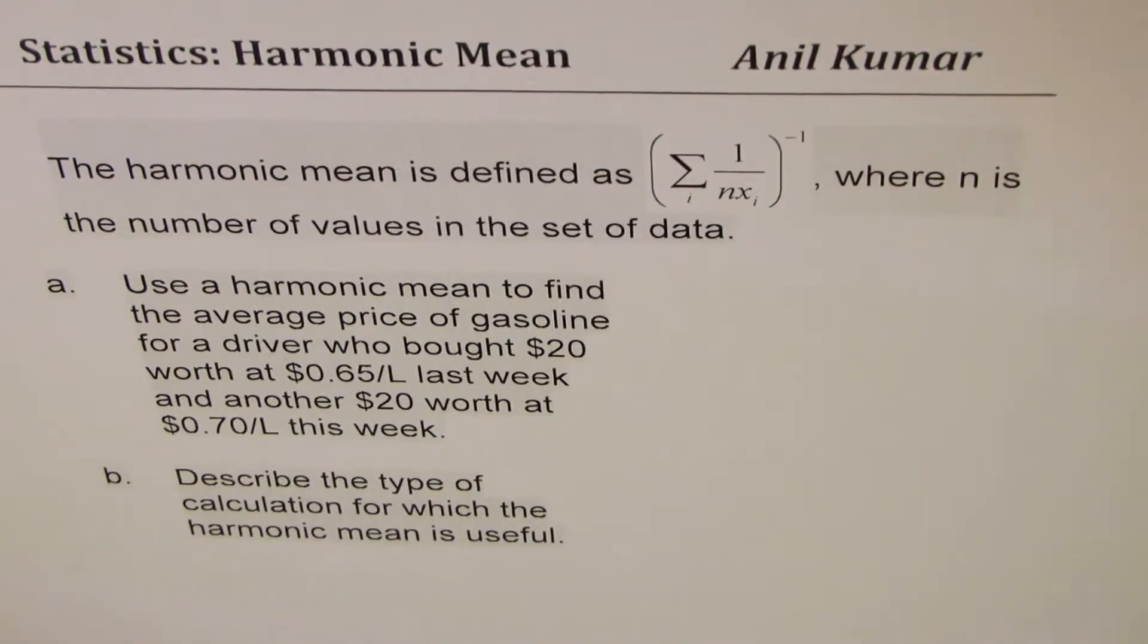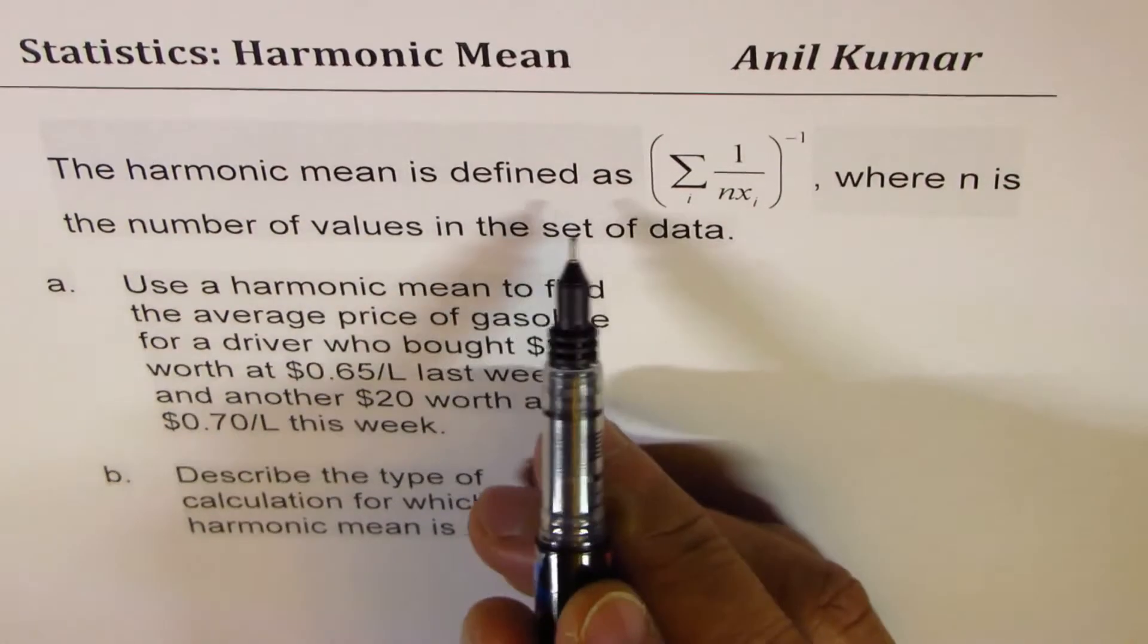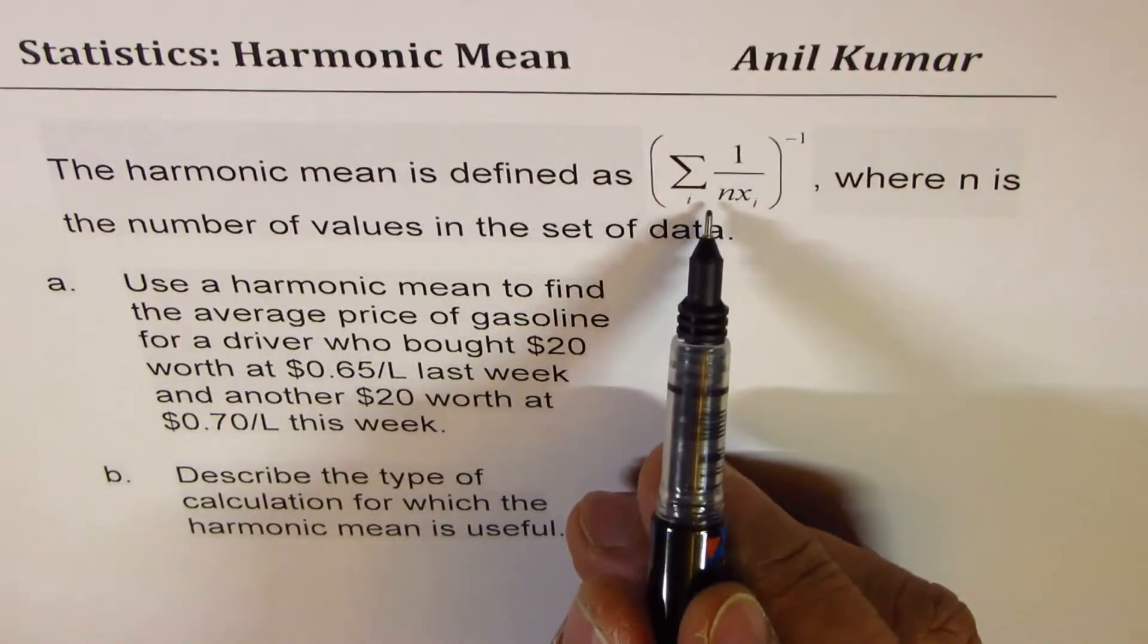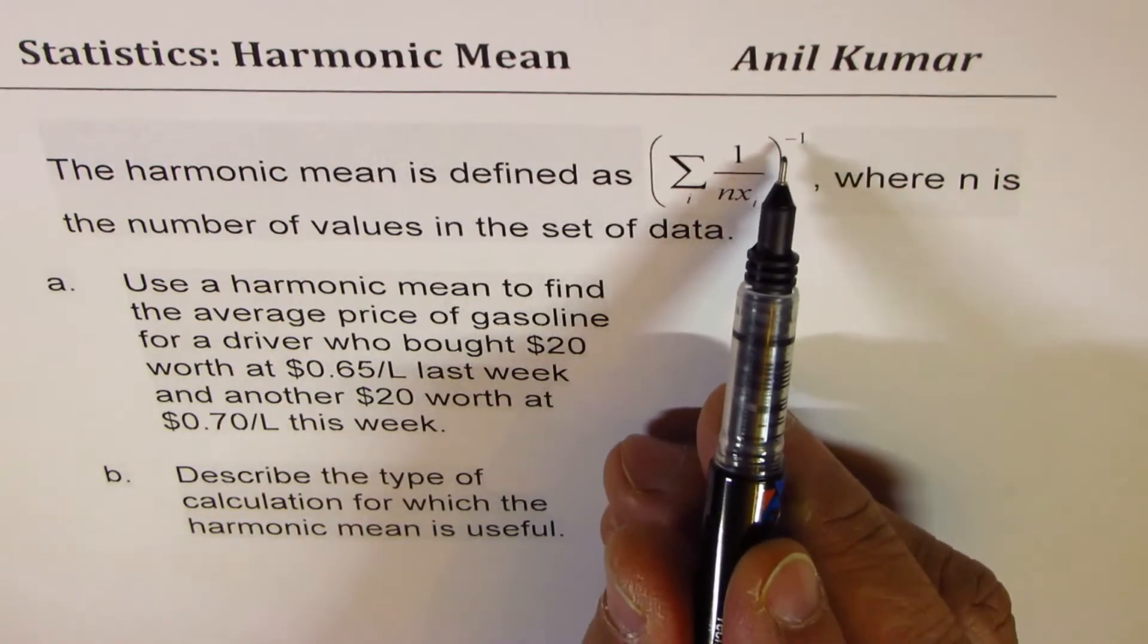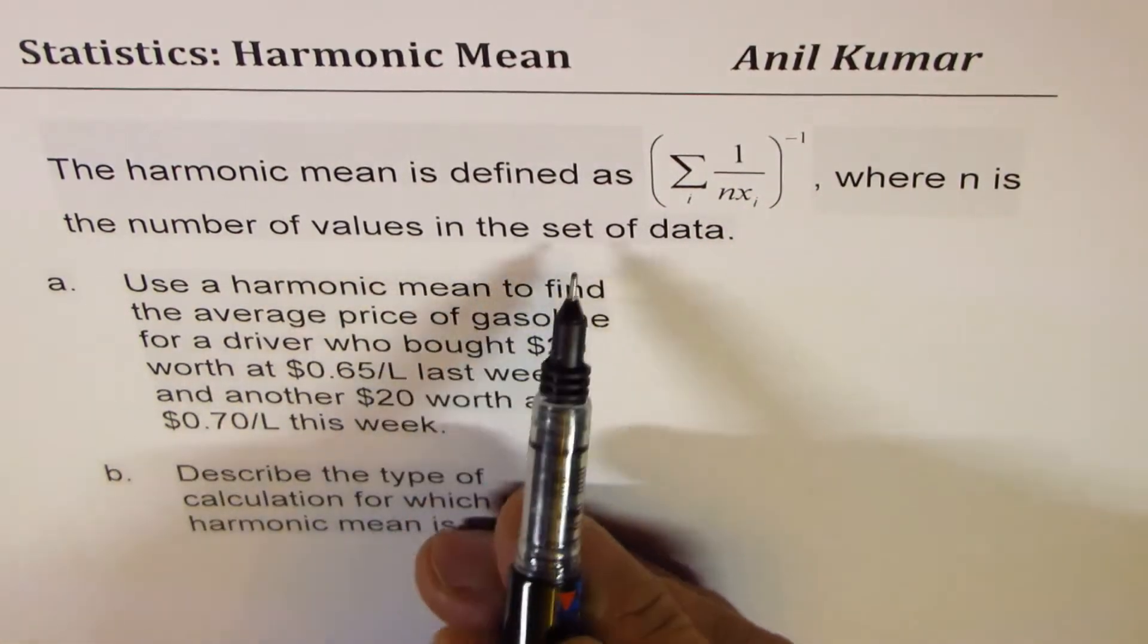I'm Anil Kumar sharing with you a very important test question based on harmonic mean. The harmonic mean is defined as sum of 1 over n xi to the power of minus 1, where n is the number of values in the set of data.